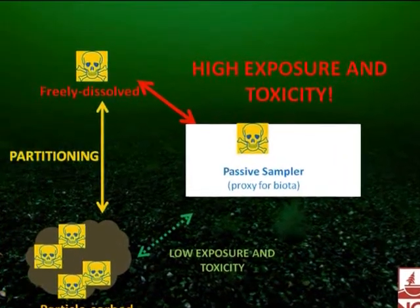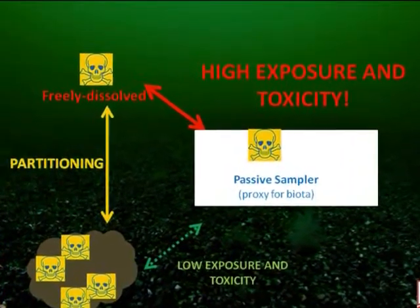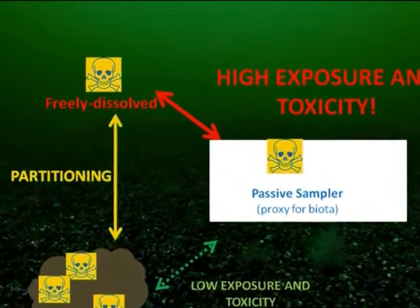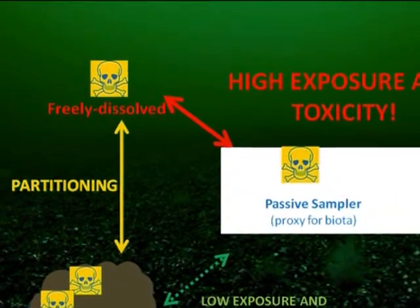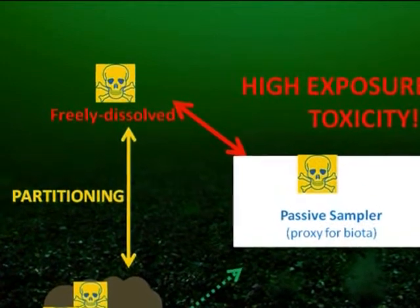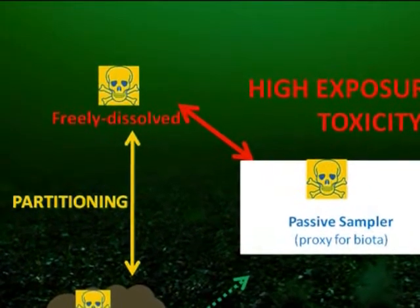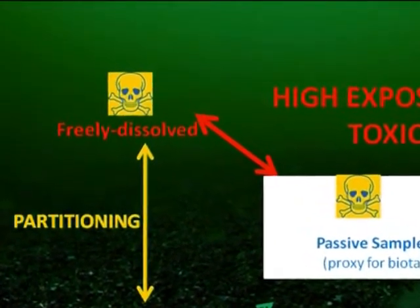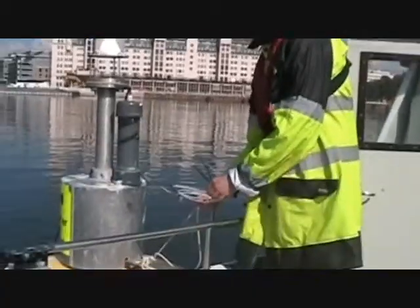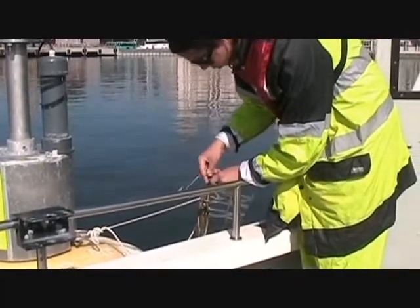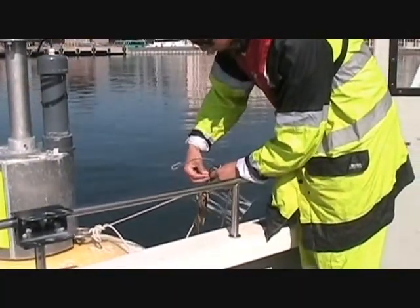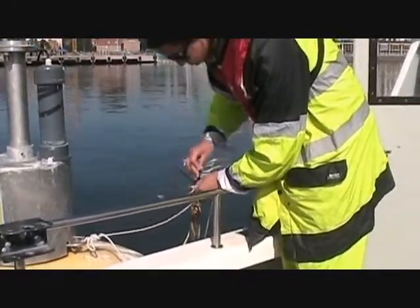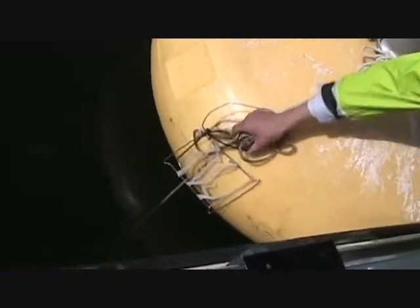The passive samplers take up exclusively freely dissolved water molecules, which is similar to what those low food chain aquatic organisms do. Traditional methods are not often able to measure the freely dissolved concentration of contaminants like PAHs. But with passive sampling, it's possible. One of the most practical aspects of passive sampling is that it can be easily integrated into a variety of monitoring programs and technologies.